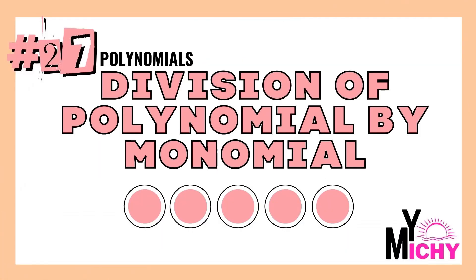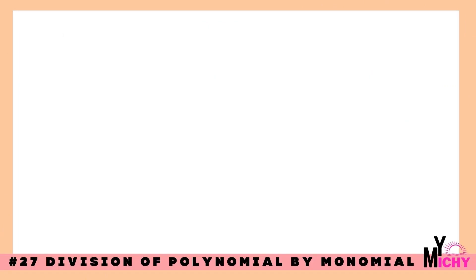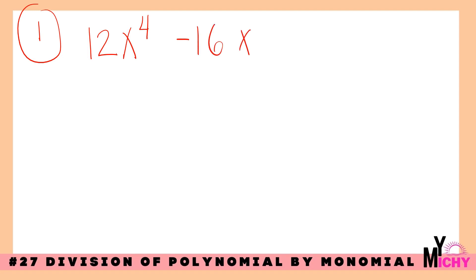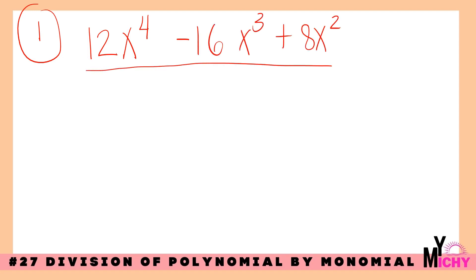Division of polynomial by monomial. When we say monomial, we have only one term. So let's have an example. For example, we have number one: 12x raised to the 4th minus 16x cubed plus 8x squared, divided by 4x squared.